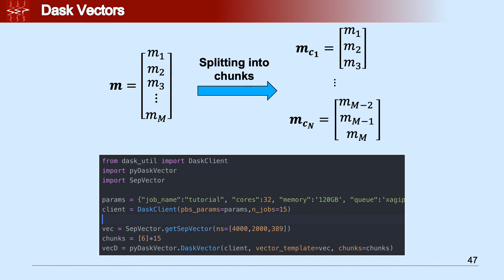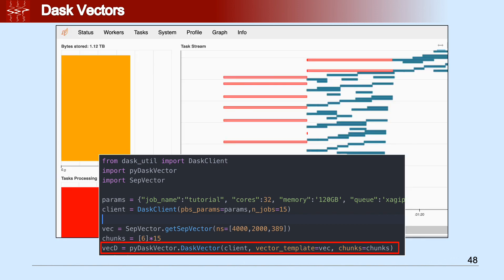And the code to do so is very simple. We can start a Dask client. In this case, we have 15 workers. Decide the size of a single chunk. How many chunks we have. In this case, we have six chunks per worker. And then allocate the vector, as you can see here in the last line. If you look at the Dask dashboard, you can see that the memory allocated is roughly 1.12 terabytes here on the top left.